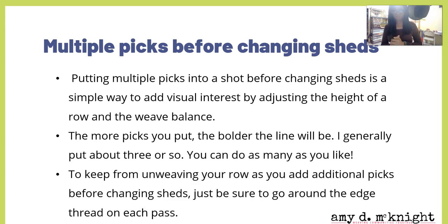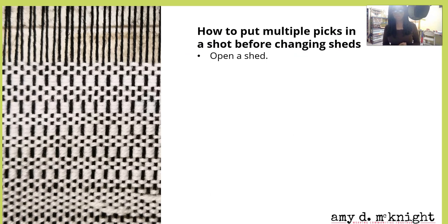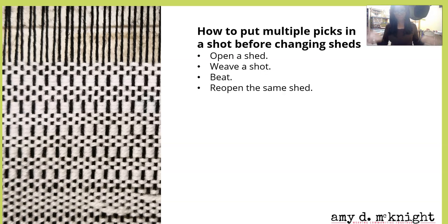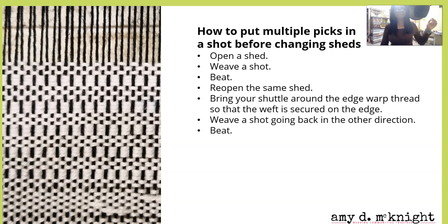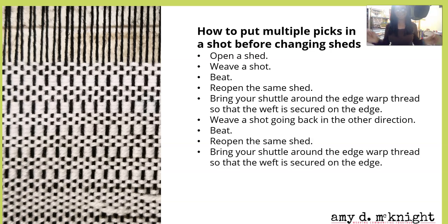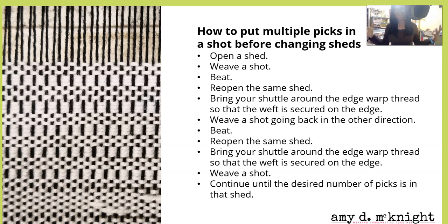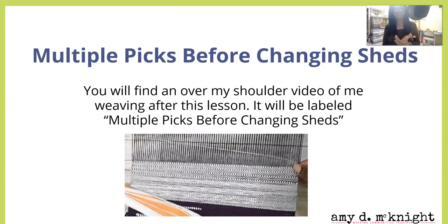To keep from unweaving your row as you add additional picks before changing sheds, just be sure to go around the edges on each pass. Here's how: open the shed, weave a shot, beat. Reopen the same shed, bring your shuttle around the edge warp thread so the weft is secured on the edge, weave a shot in the other direction, beat. Open the same shed again, bring your shuttle around that edge, weave a shot, and continue until the desired number of picks are achieved in that shed. Then beat and change sheds.